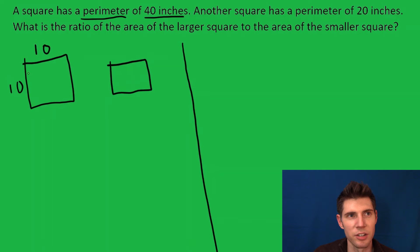If the other one has a perimeter of 20 inches, then each side is going to be 5 inches: 5, 10, 15, 20. So what are the areas? The area of 10 by 10 is 100, and the area of 5 by 5 is 25. They want to know what is the ratio of the area of the larger one to the smaller one.